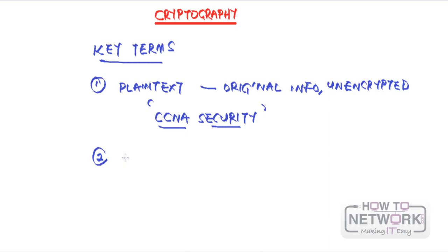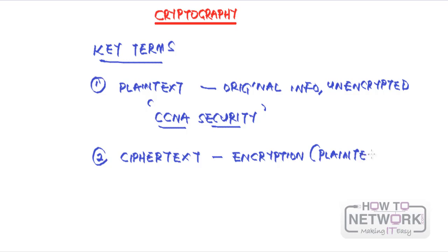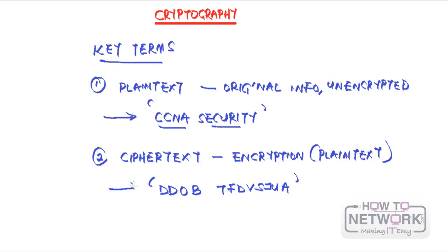The second term is ciphertext. Ciphertext is the product of encryption applied to the plain text. So for example, if 'CCNA security' is our plain text, the ciphertext would be something like 'DDOBTFDSJU A' — an unreadable string. This plain text becomes that ciphertext after encryption.